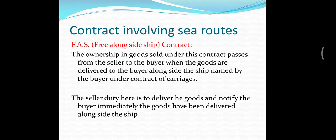Contract number one is FAS contract, or Free Alongside Ship contract. FAS stands for Free Alongside Ship. Here, the ownership in goods sold under this contract passes from the seller to the buyer when the goods are delivered to the buyer alongside the ship named by the buyer under the contract of carriage.